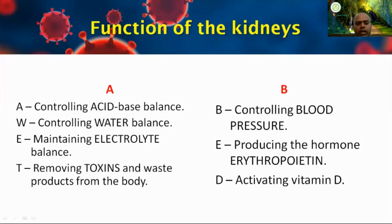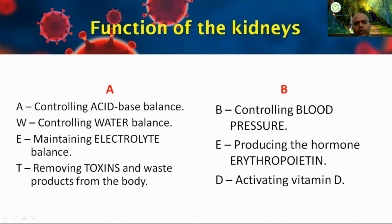What are the functions of the kidney? The kidney maintains acid balance, water balance, and electrolytes balance. It removes toxins and waste products from your body, controls your blood pressure, and produces the hormone erythropoietin — that is a protein — and activates vitamin D. These are all the functions of the kidney. Now, what is dialysis?